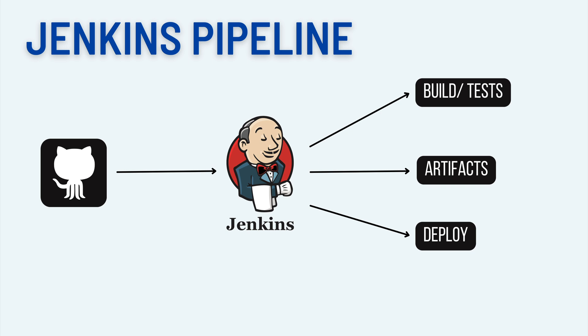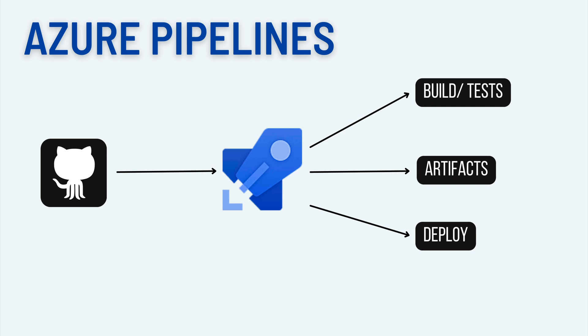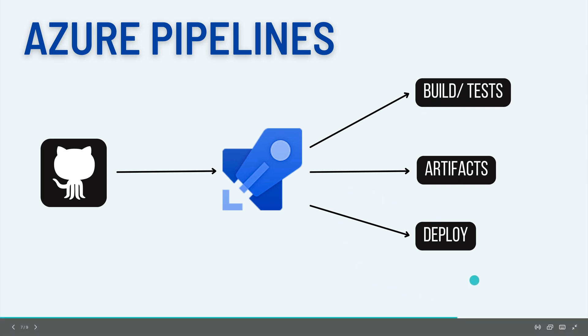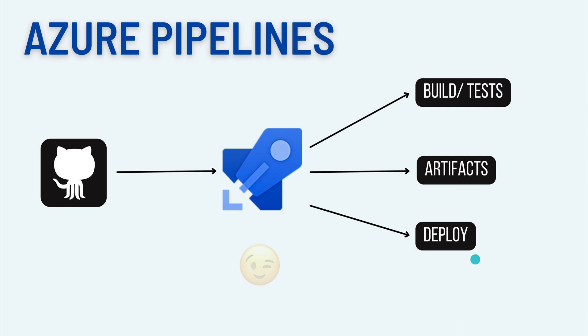For this demo, we're going to replace Jenkins and see how Azure plays that role. I'm going to commit something to GitHub, which will trigger Azure Pipelines. Azure will take the Java code from GitHub, build it, and store the artifact. I'm not going to do the deployment part yet in this demo, but we can cover that in a future video based on the response to this video.